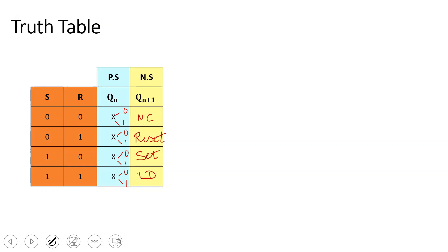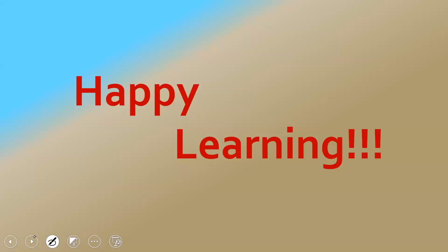This is the truth table for SR latch using NOR gates: S=0, R=0 means no change; S=0, R=1 means reset (output 0); S=1, R=0 means set (next state is 1); S=1, R=1 is an invalid or indeterminate state. Thanks for watching this video. Happy learning.